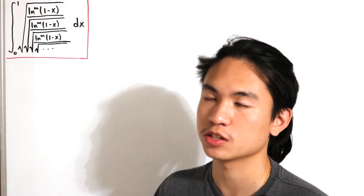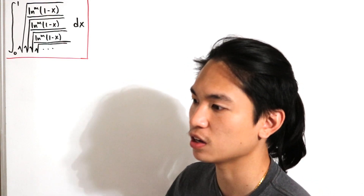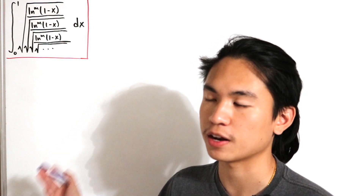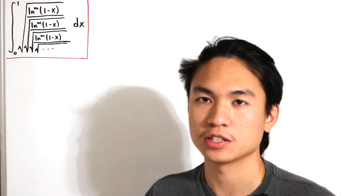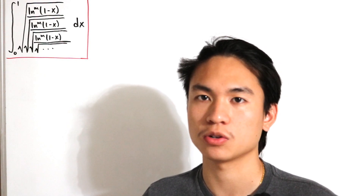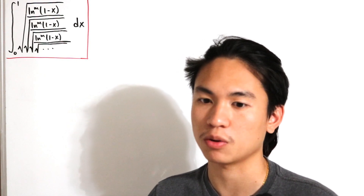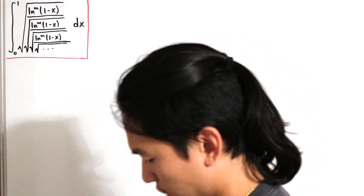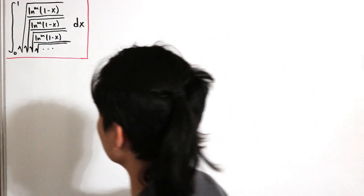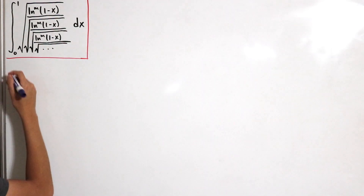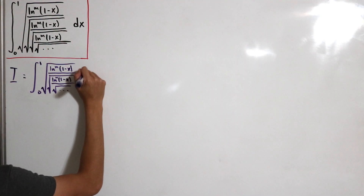We just do a substitution, solve for that variable on its own, transform it with a different variable, and then compute that definite integral. That's basically the most simplistic method we can do. So let's start by defining — we'll let I equal this same integral given. So I is our given integral.